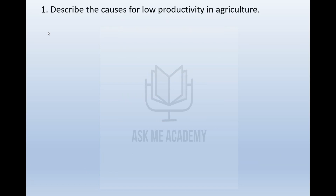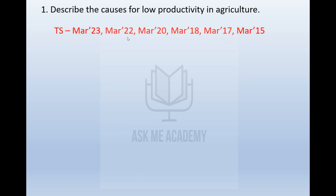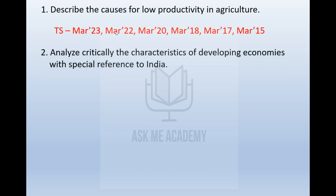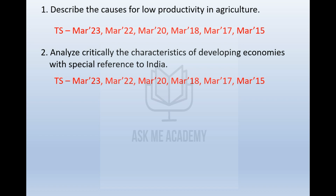The first and most important question is: describe the causes of low productivity in agriculture. This has been asked 6 out of the 7 years we have seen. The second one is: analyze critically the characteristics of developing economies with special reference to India. This question has also been asked 6 times out of the 7 question papers.